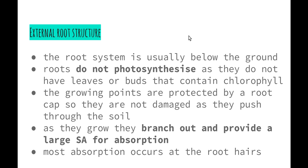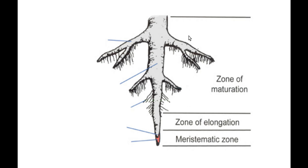As the roots grow, they branch out and provide a large surface area for absorption. Most absorption occurs at the root hairs, which are very fine structures on the surface of the roots that help to increase the surface area. If we have a look at this diagram of a tap root, a simple root that pushes down into the soil and has branching sections from the side.